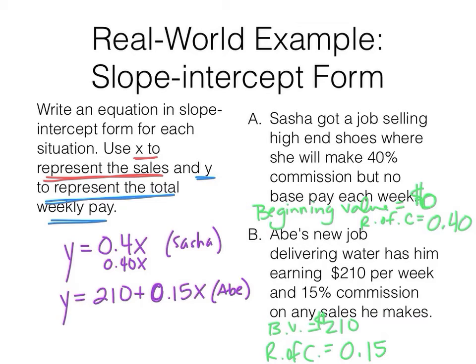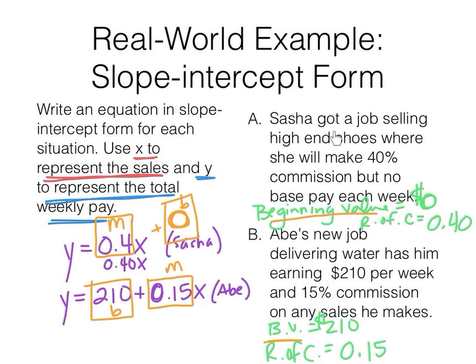Jumping back to this example real quick, I want to point out something to you about a real-world way we can talk about this situation. The slope is that rate of change and then the y-intercept in this case is zero, that's that beginning value of zero. And over here the slope is that rate of change, and this is the beginning value. I want you to be thinking about how in real-world examples, that rate of change is how the values change as you go through situations, and that y-intercept is that beginning value, that starting value, that if you had zero sales or zero for time, that's where you'd start.